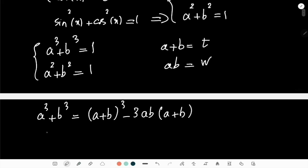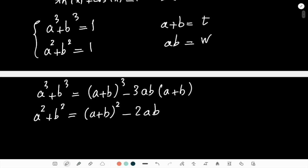this is (a+b)³ - 3ab(a+b). And a² + b² can similarly be written as (a+b)² - 2ab. If I just replace a + b with t and ab with w, then I get here a new system of equations,